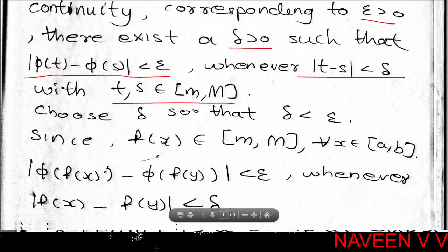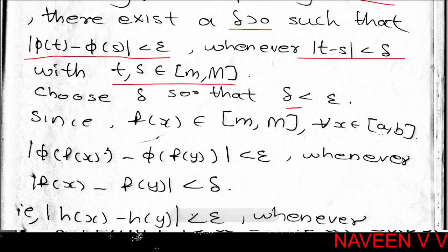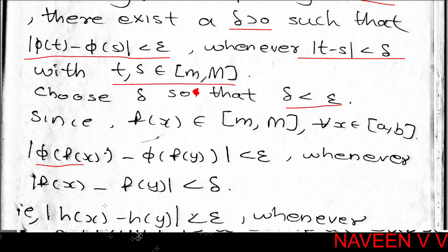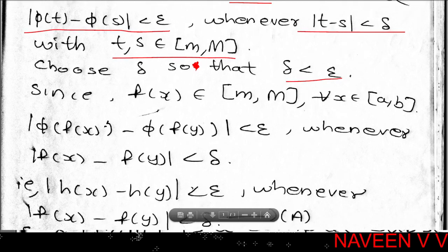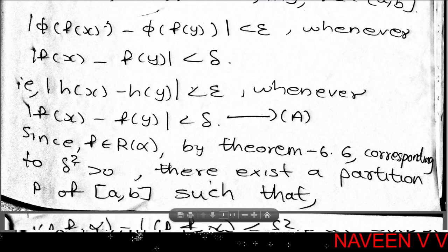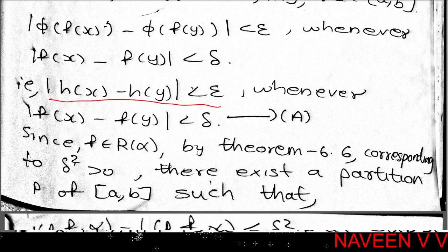We choose δ < epsilon. Since f's image lies entirely within [m, M], for t = f(x) and s = f(y), we get |φ(f(x)) − φ(f(y))| < epsilon whenever |f(x) − f(y)| < δ. Since φ∘f = h, this gives |h(x) − h(y)| < epsilon whenever |f(x) − f(y)| < δ.